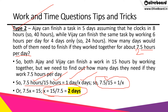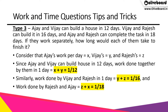The third type of question is equation-based. Ajay and Vijay can build a house in 12 days, Vijay and Rajesh can build it in 16 days, and Ajay and Rajesh can complete the task in 18 days. If they work separately, how long would each of them take? Consider Ajay's work per day as X, Vijay's as Y, and Rajesh's as Z, since we have three unknowns for three people.